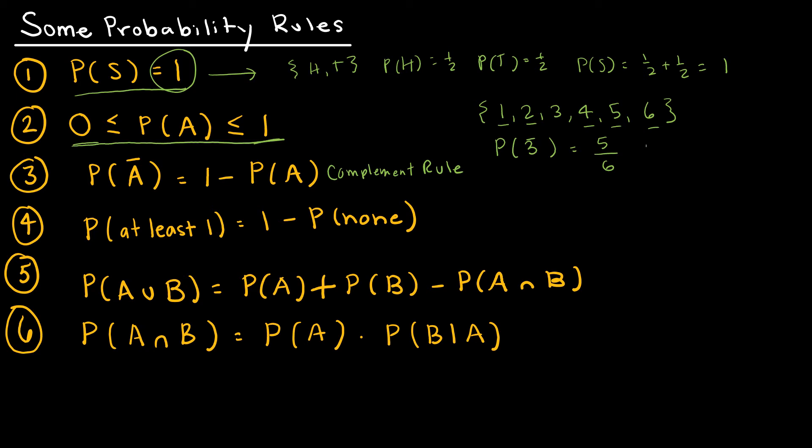What the complement rule says is, let's say I know the probability of a 3. I can take 1 minus the probability of a 3, and that's going to be the probability of not 3. So probability of not 3 would be 1 minus 1/6, which is 5/6. So it's 5/6 either way. But sometimes it's easier to do the opposite problem using the complement rule.